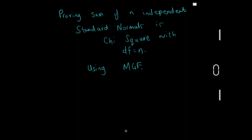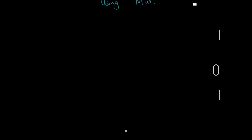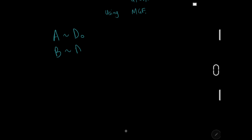There are some prereqs as always. The first one is that we are using the method of moment-generating functions. Basically, if you have some random variable distributed with a particular distribution, and you have another random variable distributed with a separate distribution, then if you can show that M_A(t) is equal to M_B(t), then you have shown that distribution A is the same as distribution B.